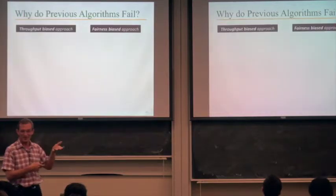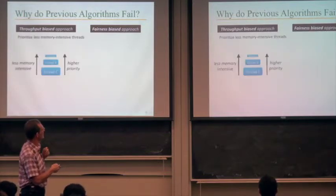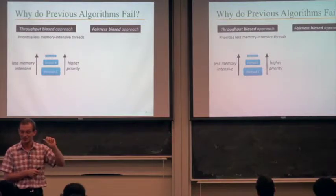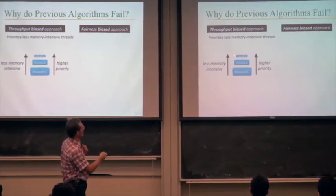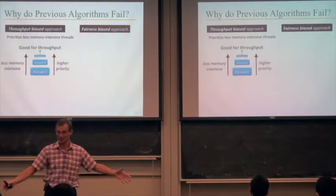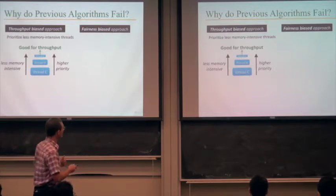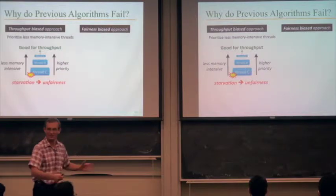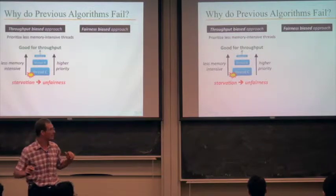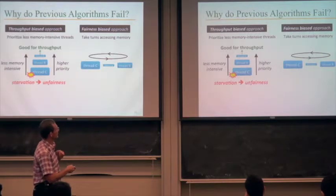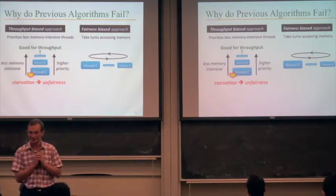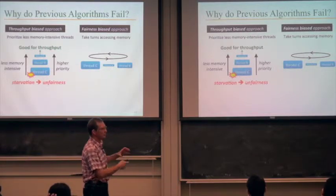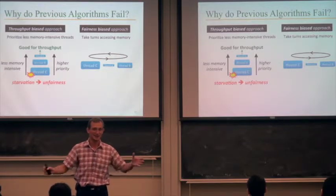Why do previous algorithms fail? There are two approaches. The throughput-biased approach prioritizes less memory-intensive threads — that's the Atlas-like approach. This is good for thread A, which gets prioritized and keeps its core busy, but bad for thread C, which gets stuck behind many other threads and starves. The fairness-biased approach gives each thread its turn to access memory in a round-robin fashion, possibly with a time slice during which that thread is prioritized.